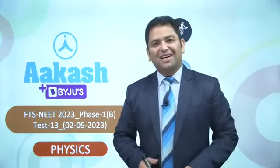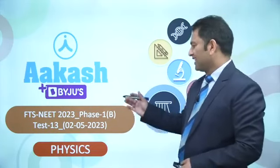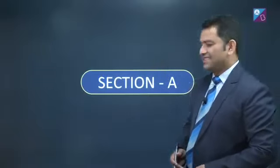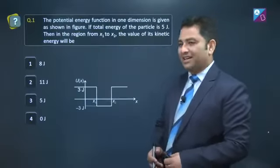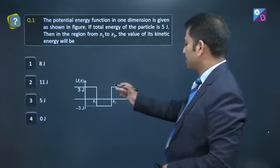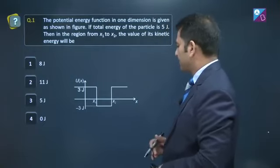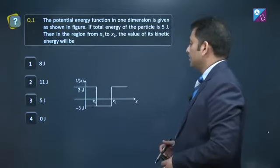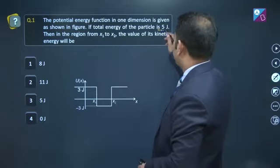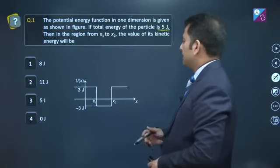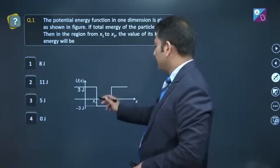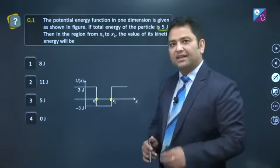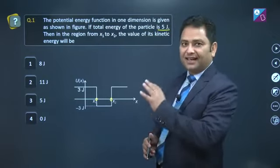Hello and welcome. Welcome everyone to the discussion of test number 13, phase 1B. Let us start with section A, the first question of section A. A potential energy versus x graph is given. Potential energy values are also given. The question states, total energy of the particle is 5 joule. So, in the region from x1 to x2, we need to calculate the value of kinetic energy.